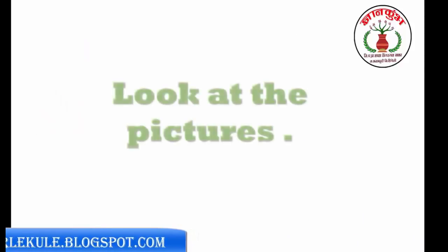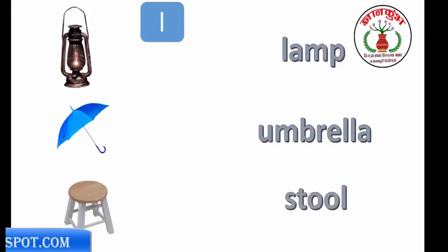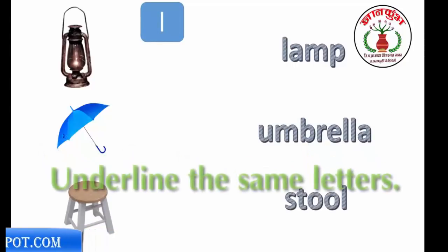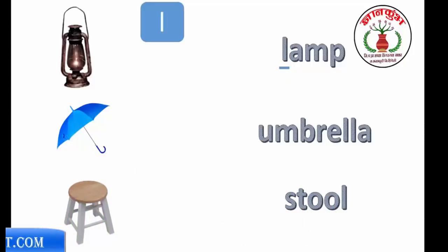Look at the pictures. Repeat the words: LAM, umbrella, STOOL. Underline the same letters. N, N, N.